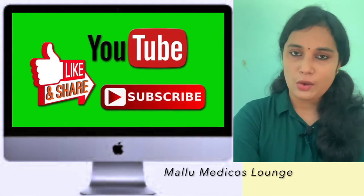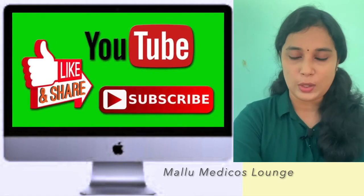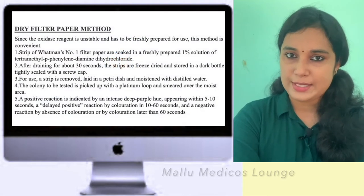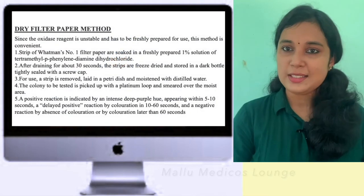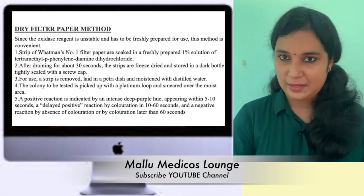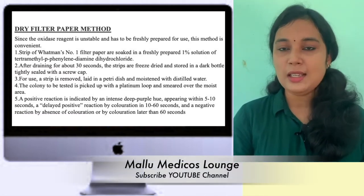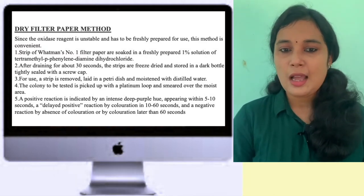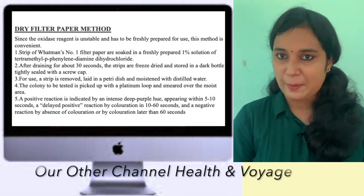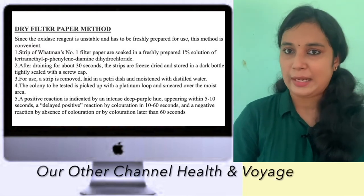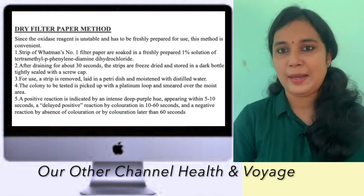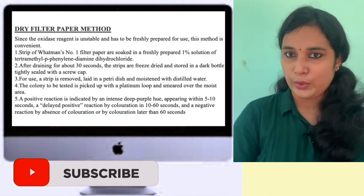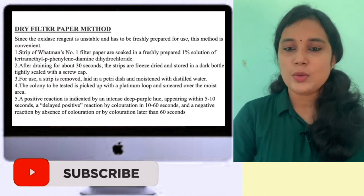Now we will do the Oxidase Test. The first procedure is the dry filter paper method. We cut filter paper into strips and saturate them with freshly prepared 1% TMAD solution as the oxidase reagent. The reagent must be freshly prepared because it is very unstable.